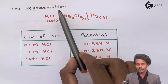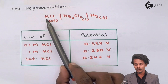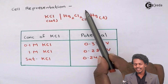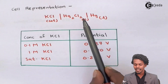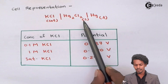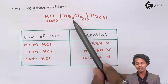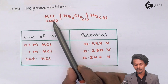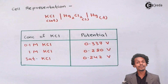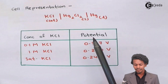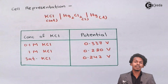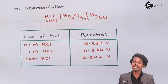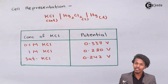The calomel electrode can be represented as consisting of a KCl solution — which can also be saturated — with a layer of Hg₂Cl₂ separated by liquid Hg. Since solid Hg₂Cl₂ and liquid mercury are in different physical states, a vertical line is used in the notation. Similarly, the KCl solution is separated by a vertical line. Since it is a secondary electrode, its overall potential is not zero, but it can be exactly known depending on the concentration of KCl used.